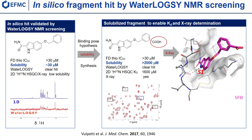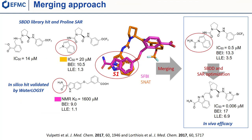Based on the generated binding pose, a carboxylic acid was added at the putative solvent-exposed region to make the compound more soluble. Indeed, the compound shown on the right with the carboxylic acid was more soluble, with a measured solubility of about 2 millimolar. This enhanced solubility enabled confirmation by protein-observed NMR, showing concentration-dependent chemical shift changes in the HSQC NMR spectrum reported at the bottom, and enabled the determination of a KD of about 1.6 millimolar. The crystal structure was also determined, showing the carboxylamide indole in the S1 pocket. The superimposition of this X-ray structure with the one obtained for the proline series prompted us to merge both inhibitors.